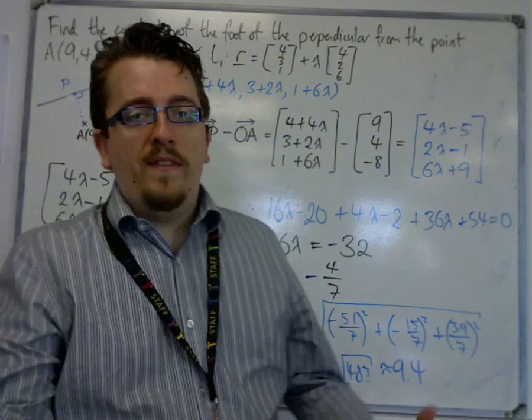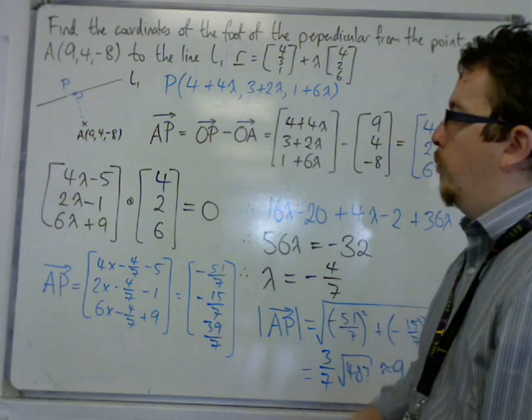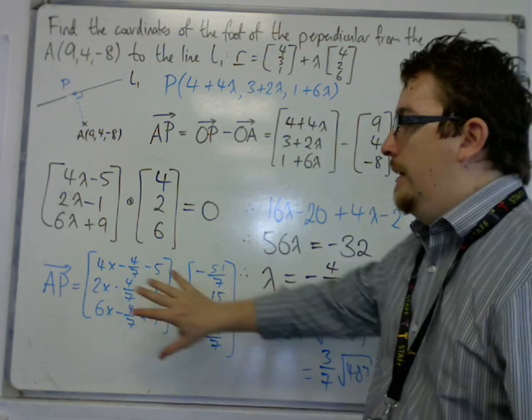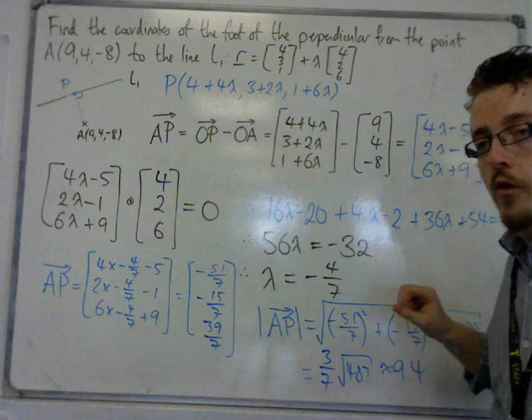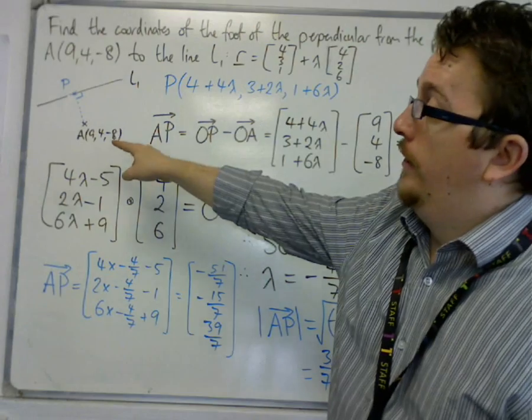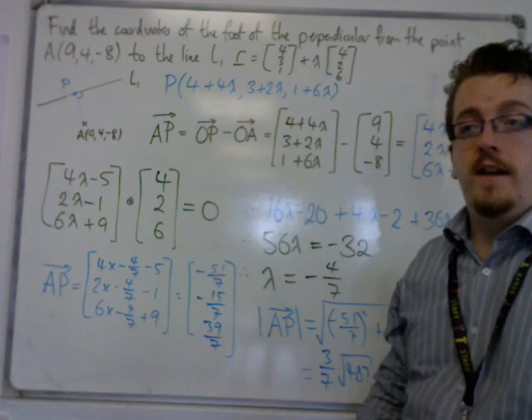So you can see it's not really that much more work to do. Once you've found the coordinates of lambda, you just plug them into the vector AP and find the length of that vector in order to find the shortest distance from A to the line L1.